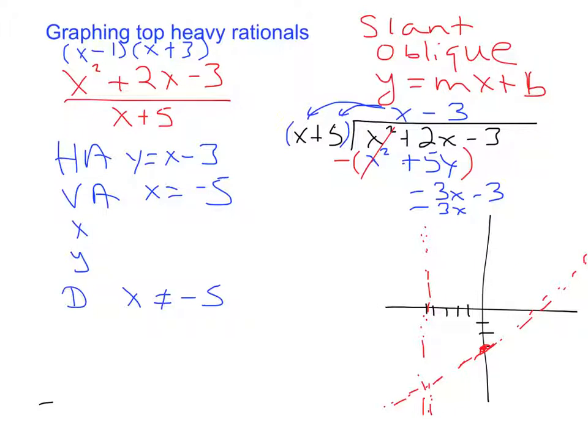So my x-intercepts are going to be negative 3 and positive 1. So I'm going to have 2 x-intercepts at negative 3, which is right here, and positive 1, which is right here.